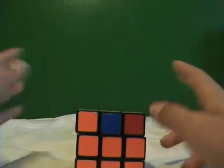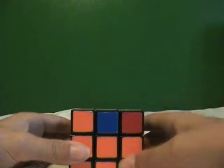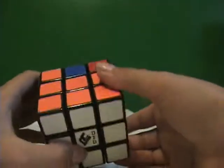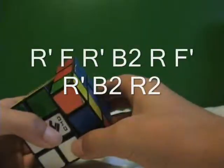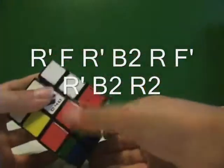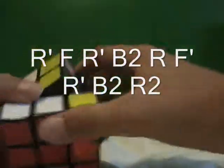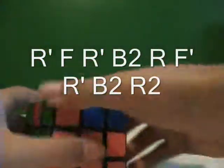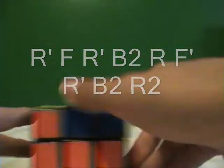And then you'll get two next to each other, and then you do it as I told you. So I do R' F R' B2 R F' R' B2 R2, and I see these two, so I put this in the back.